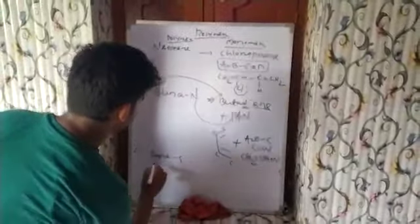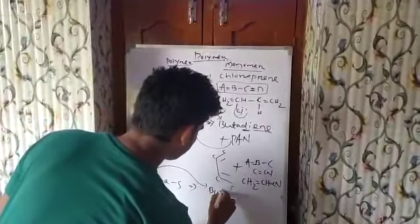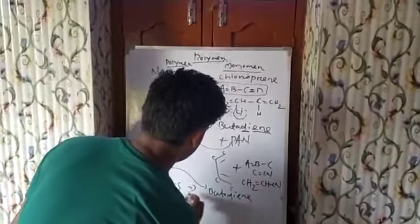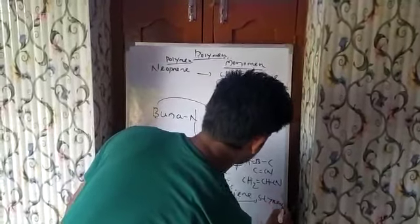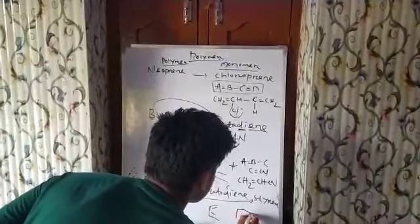Similarly, Buna S. What are the monomers? B for butadiene and S for styrene. Butadiene structure is same.